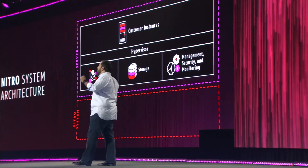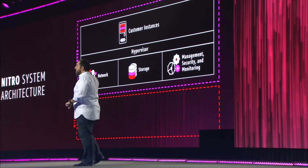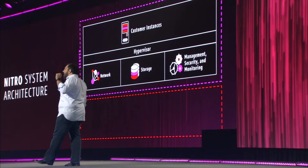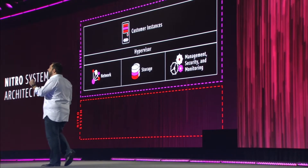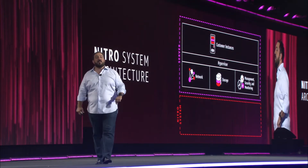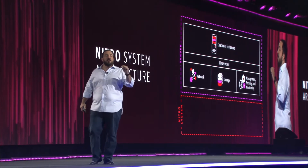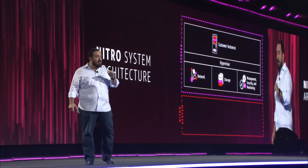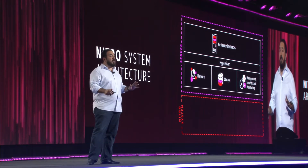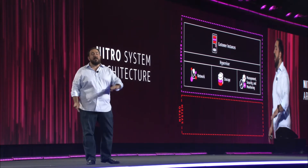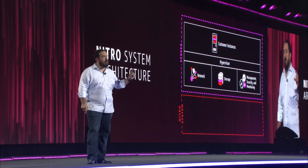The Nitro system would be built to be modular, and these functions would be built on microservices on the Nitro system. This would allow us to move quickly and evolve. The benefit of this approach is that we can allocate all the server resources to customer instances. Our goal was to make the EC2 instance completely indistinguishable from bare metal.